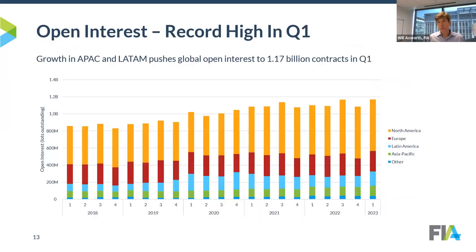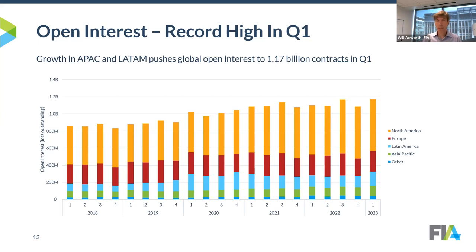On open interest — which is perhaps even more important to many people on this call, since it's really where people are holding risk over time — in the first quarter on a global basis we actually hit a record, just slightly above Q3 2022, around 1.17 billion contracts. That's quite a positive dimension, because it means clients are actually adding to risk positions in their accounts.